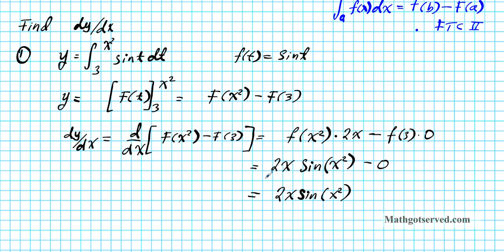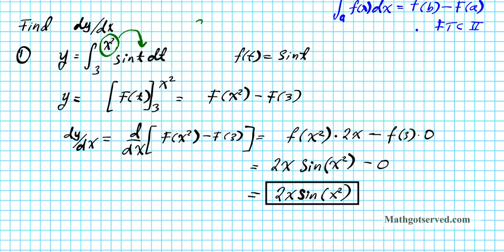Now let me show you a shortcut — you don't have to do all this work to get the final answer. Anytime you have a variable and a constant, to find the derivative of an antiderivative expression like this, you simply input the variable limit into the function. You get sin(x²), then multiply by the derivative of that variable limit, which is 2x, giving your final answer. The constant piece drops off because differentiating it via the chain rule gives 0. So you just take x², plug it in to get sin(x²), multiply by the derivative 2x, and there's your final answer in less than a second.